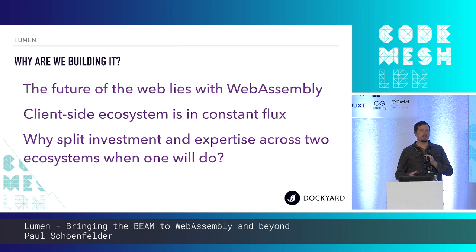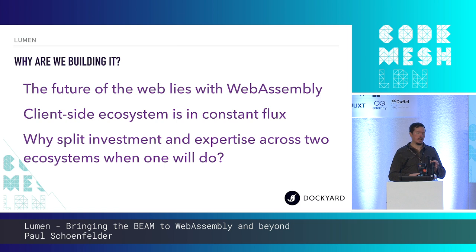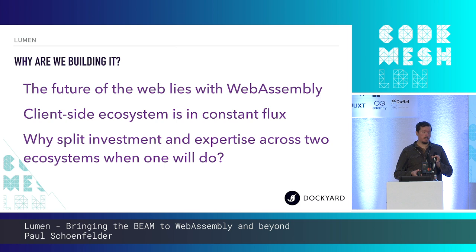If you're already using Elixir and Erlang on the back end and JavaScript on the front end, the only reason you're using JavaScript on the front end is because it's the de facto language of the web. But with WebAssembly, that changes. The question really becomes: why would you necessarily want to use two languages if one language can be used in both environments without any loss in capability or features?